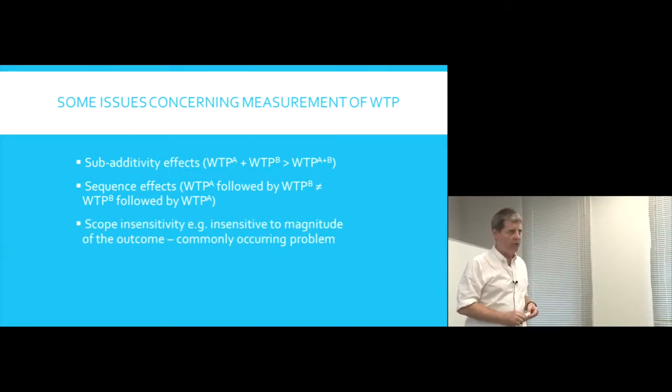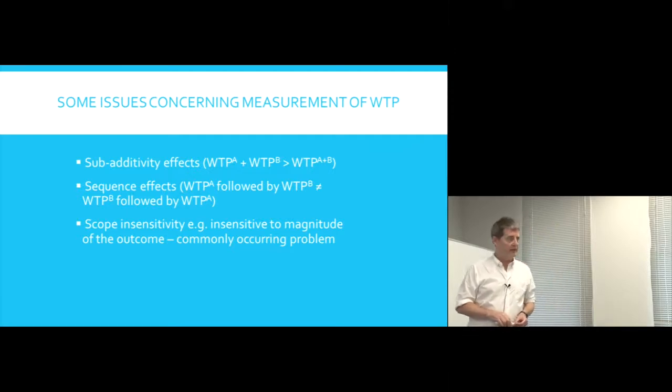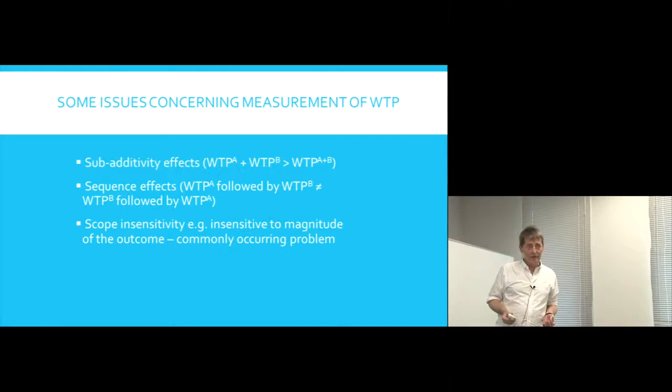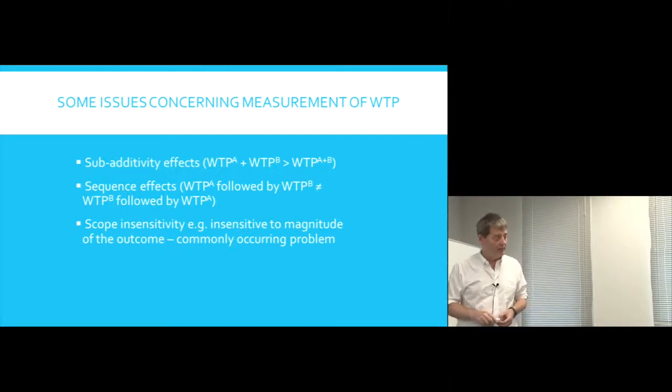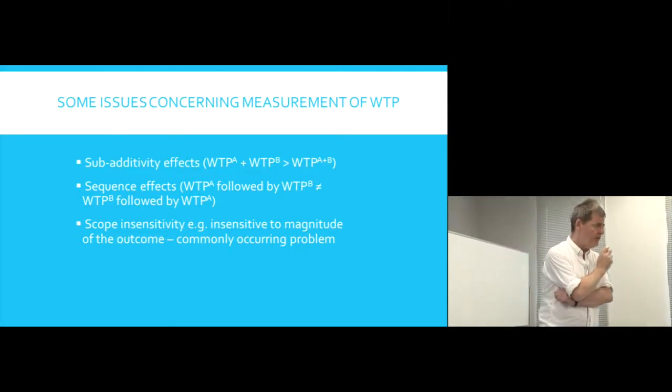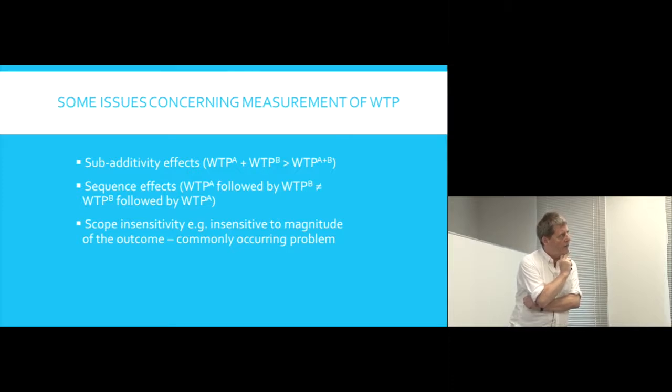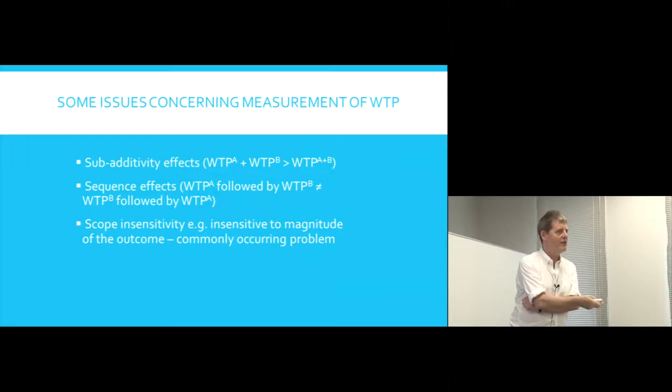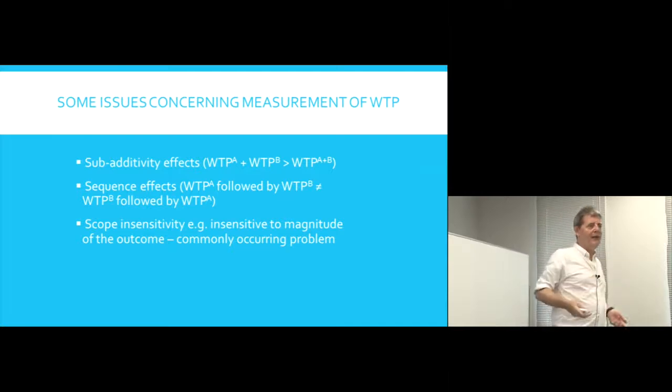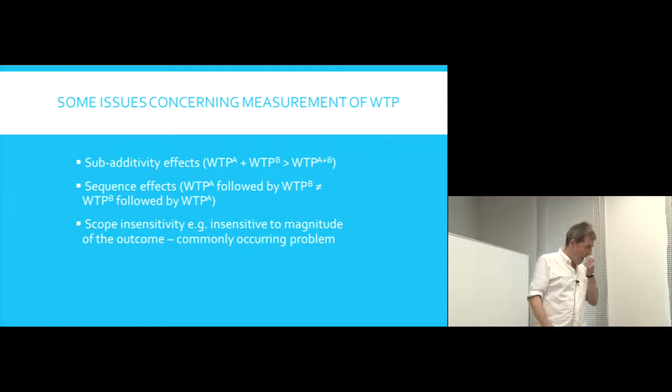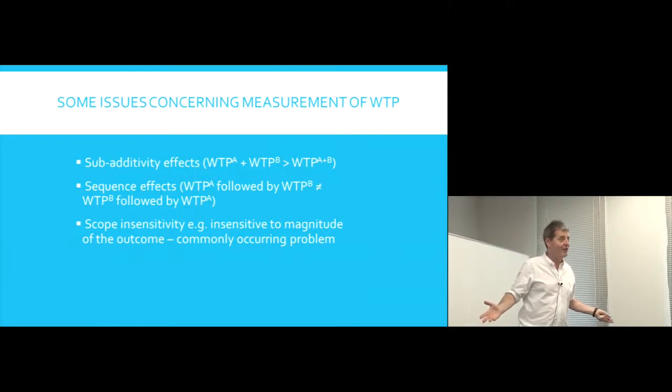But probably the biggest problem is something described as scope insensitivity, and that is people's willingness to pay is frequently rather insensitive to the magnitude of the outcome. This was first observed in environmental economics where people were asked how much they might be willing to pay to protect breeding sites for some rare species. How much are we willing to pay to ensure that 50 breeding pairs of whatever animal or bird we're thinking of were protected, and then if you ask them how much are we willing to pay if 50,000 breeding pairs were protected.